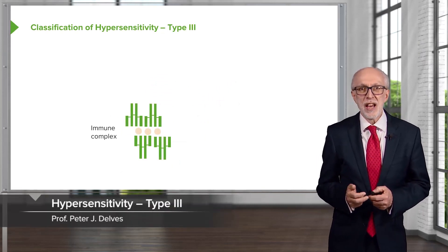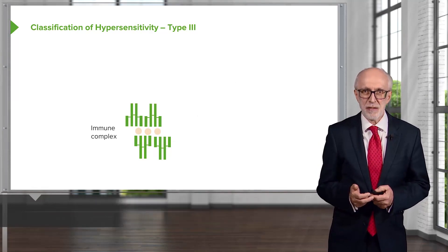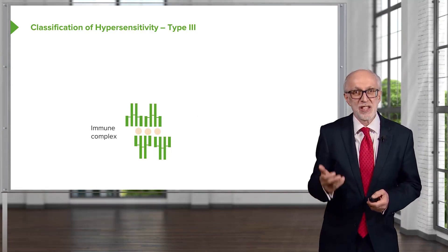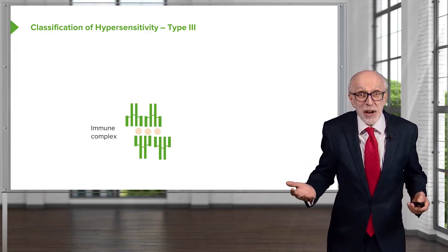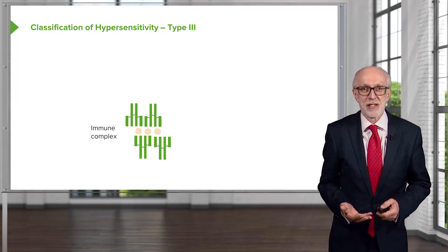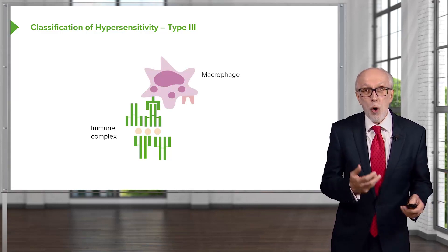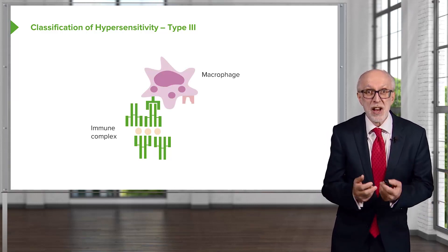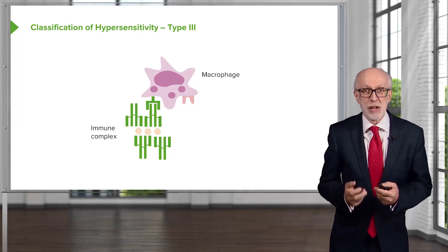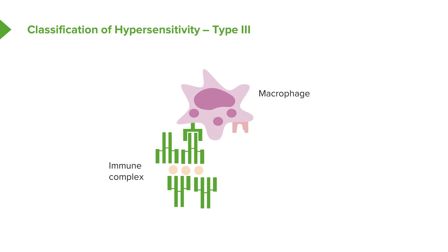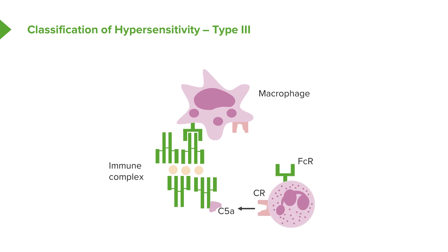Type 3 hypersensitivity is immune complex mediated hypersensitivity. An immune complex is simply an antibody bound to an antigen — that's what antibodies do. But in this situation there is binding to an inappropriate antigen, or immune complexes become trapped in small tissue spaces in the body causing pathology. Macrophages can become activated, complement can become activated, and neutrophils will be recruited if complement component C5a is generated, since that's a very potent chemotactic factor for neutrophils, and pathology will ensue.